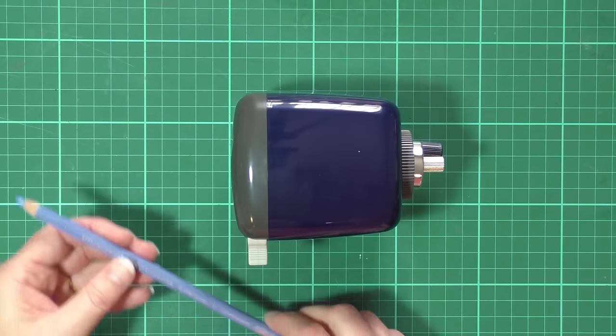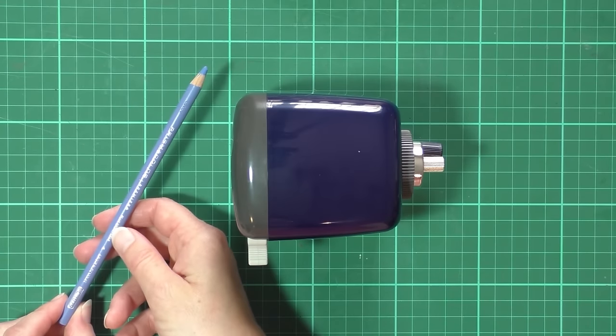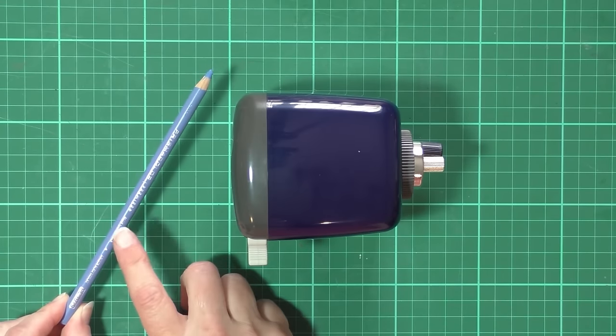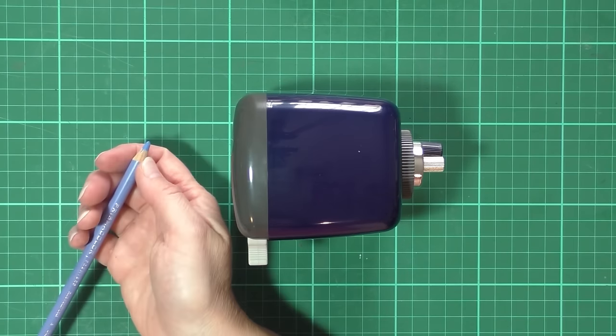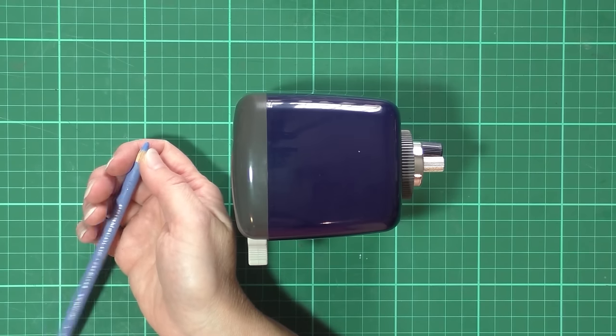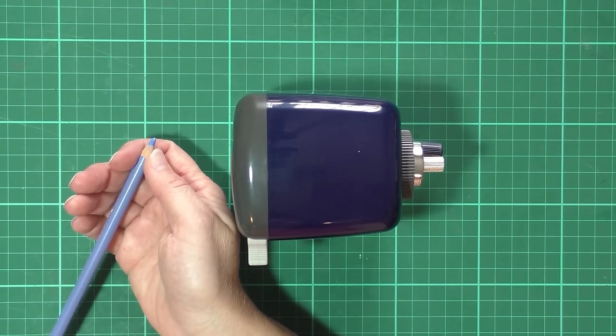Now I'll demonstrate this pencil sharpener using a Prismacolor pencil. As you know, these guys are notorious for breaking when you sharpen them, and that's because the blade, if it's a little blunt, will catch on the core and twist it, causing it to fracture off.